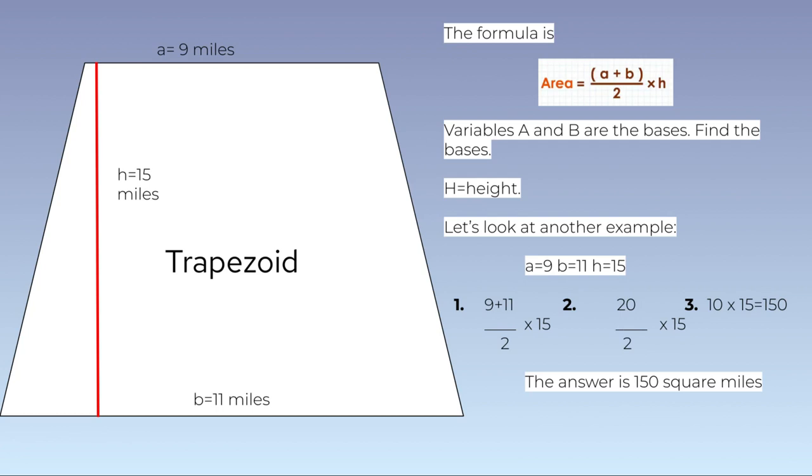A equals 9, the first base. B equals 11, the second base. And h equals 15, the height. 9 plus 11 divided by 2 times 15. 20 divided by 2 times 15. 10 times 15 equals 150. The answer is 150 square miles.